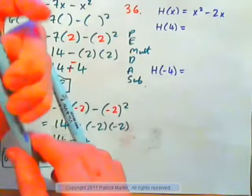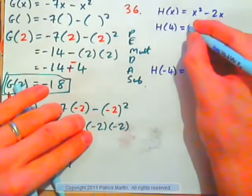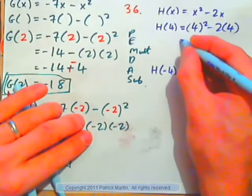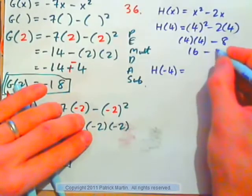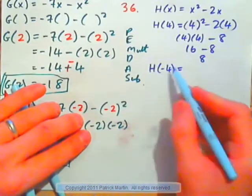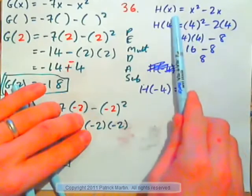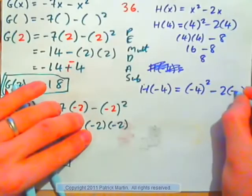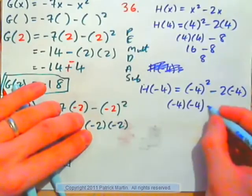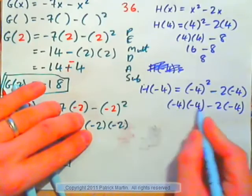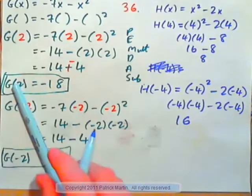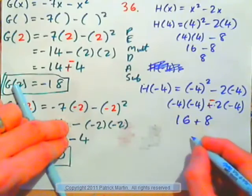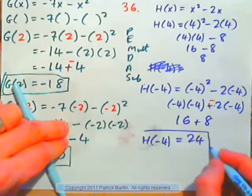h of x equals x squared minus 2x — that's exercise 36. h of 4: it's the input squared minus 2 times the input. Put 4 here and here: 4 all squared is 4 times 4, which is 16, minus 8. 16 minus 8 is just 8. Now, calculate h of negative 4. That's negative 4 all squared minus 2 times negative 4: negative 4 times negative 4 is positive 16. Minus 2 times negative 4 — think of that subtraction as plus negative, so plus negative 2 times negative 4 is plus 8. 16 plus 8 is 24. So, h of negative 4 gives us 24.